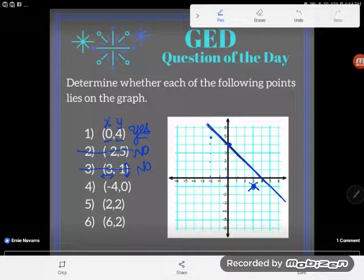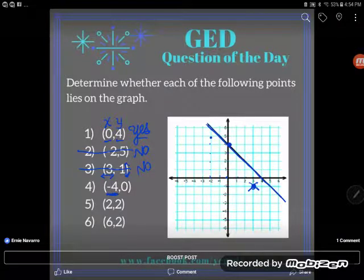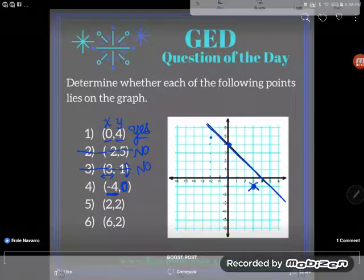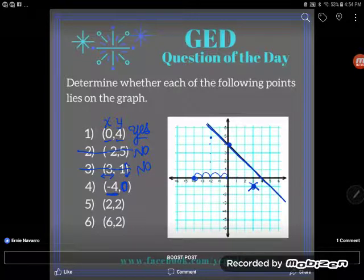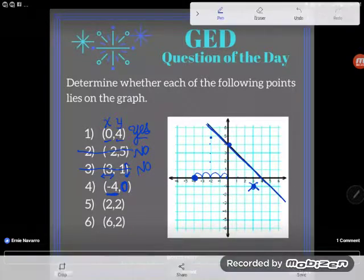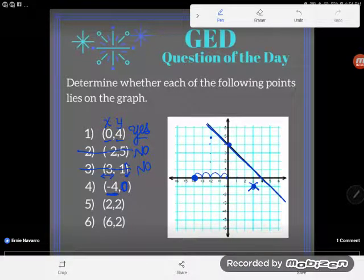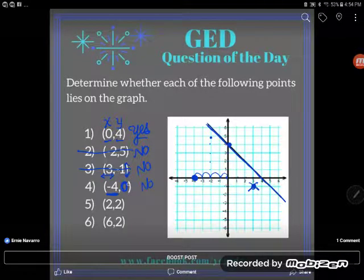Next point, the point (-4,0). So this time, I'm going negative 4 in the horizontal direction. And I have 0 vertical movement. I have no vertical movement. So starting at the origin, I'm going to come negative 1, 2, 3, 4. And I'm not going to move up or down. Of course, that point is clearly not on my line. So the answer here is also no.